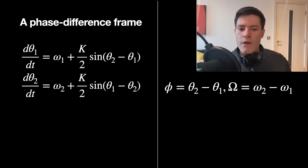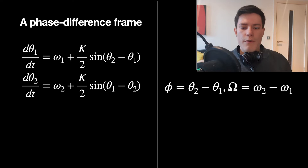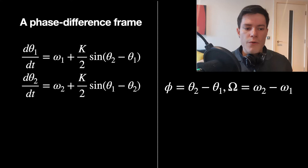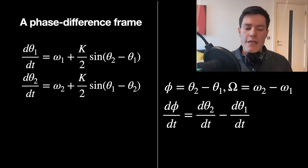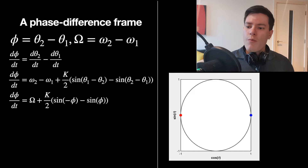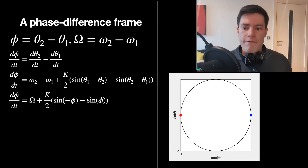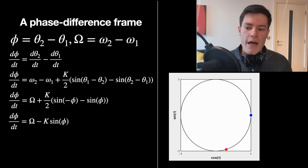To analyze this, we simplify by defining phi as theta two minus theta one, and big omega as omega two minus omega one. Looking at the rate of change of phi and rearranging, we get: d phi / dt equals big omega minus K sine phi. We've essentially moved to a frame where node one doesn't move and we see what the faster red node does around it.